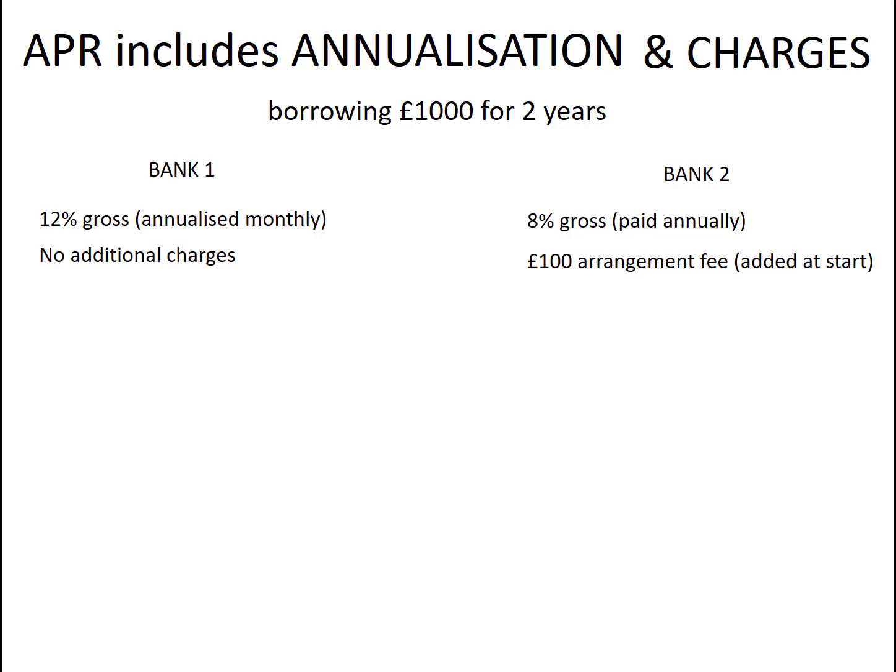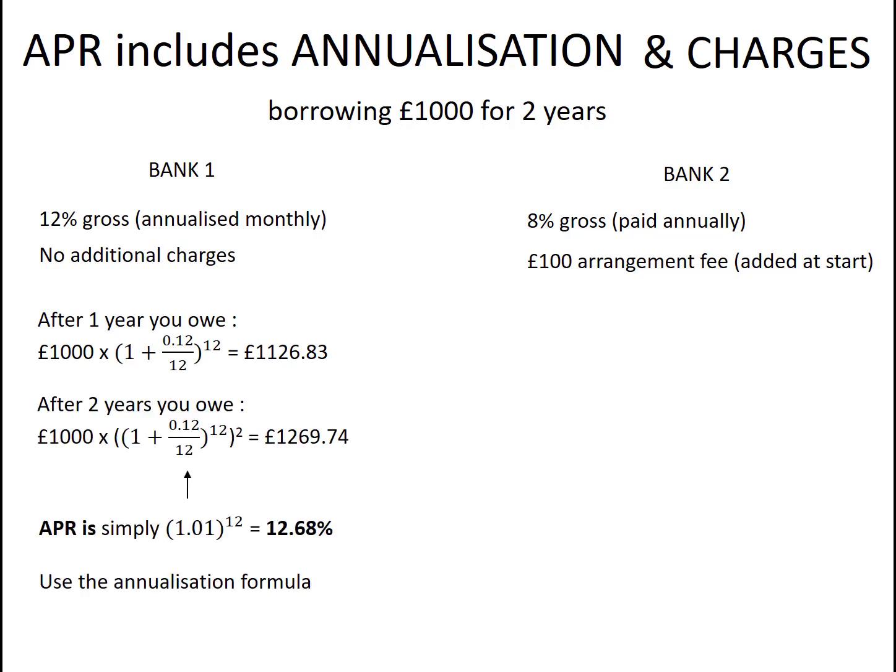Here's how we work them out. The first one is quite straightforward. After one year you owe this much; after two years you owe that amount. And the APR is simply 1.01 to the power of 12 — that's just the annualization formula we learned about when looking at AER.